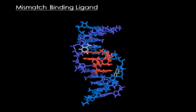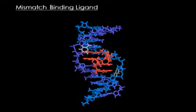We synthesized a mismatch binding ligand that binds to guanine-guanine mismatches. This molecule is applied in the treatment of genetic diseases because it recognizes guanine-guanine mismatches in DNA.